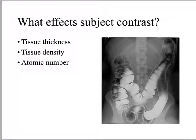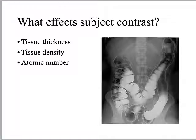Big picture level, what affects subject contrast? This should look familiar because we talked about this in CT. Tissue thickness, tissue density, atomic number — those are what affect subject contrast, those are what affect differential absorption. They affect it differently, so let's look at each one. I like this image of a barium enema or dual contrast study because it shows us all three in a single picture. We can use our minds to think creatively about this x-ray and see all three of these at work.